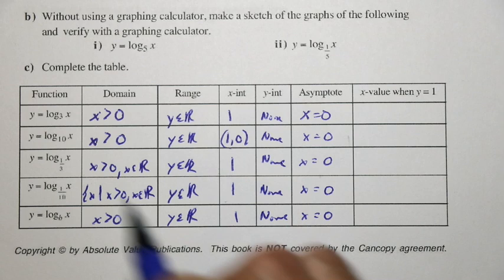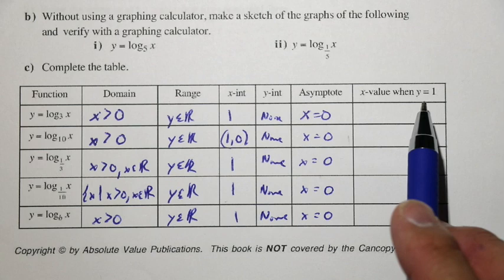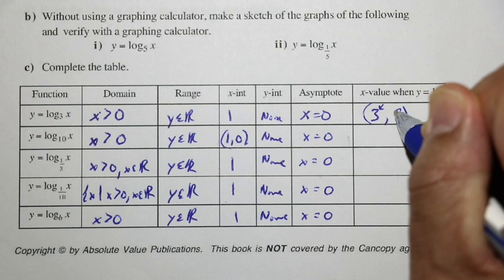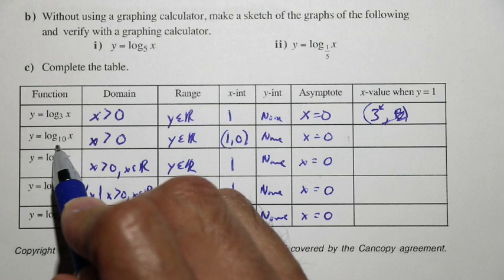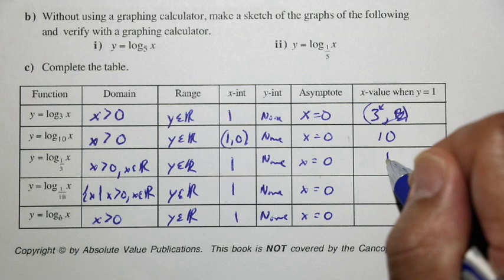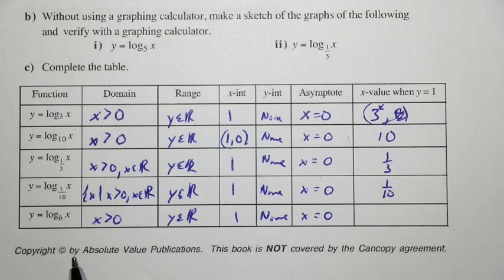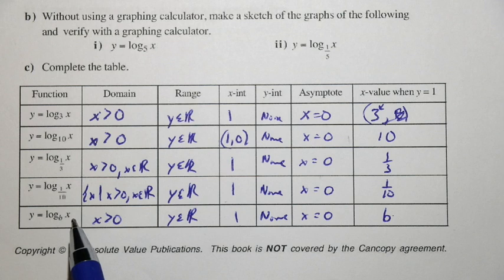For the x value when y equals 1: for log base 3 of x, when x was 3, y was 1. For log base 10, it's 10. For log base 1 third, it's 1 third. For log base 1 tenth, 1 tenth resulted in y equals 1. We can safely assume this is b — the base b, when used as input, results in a y value of 1.